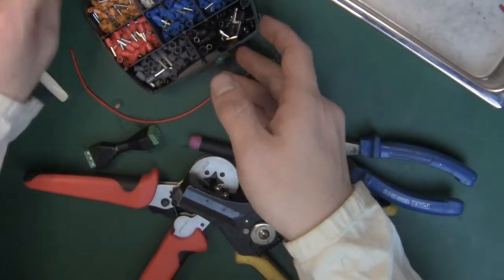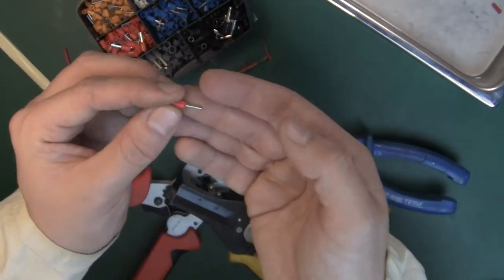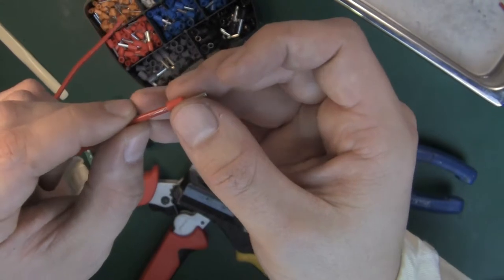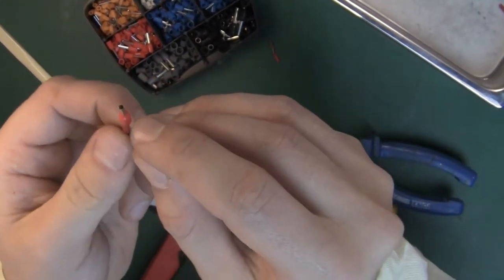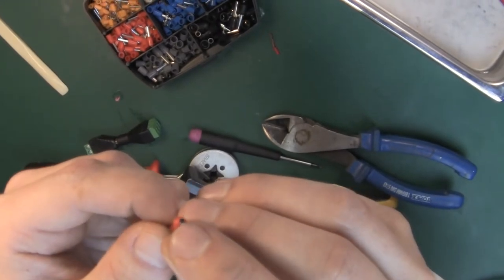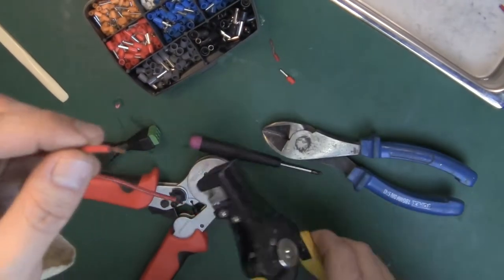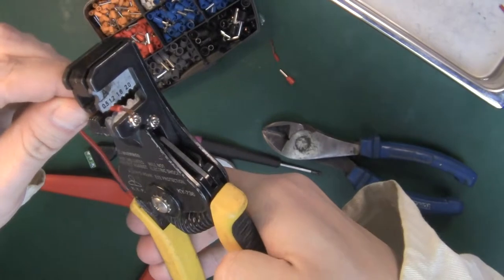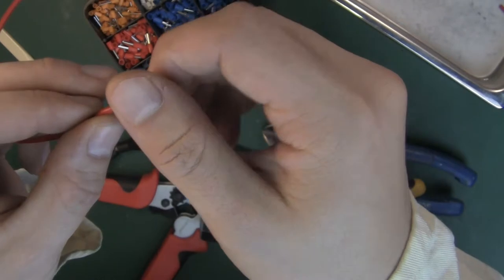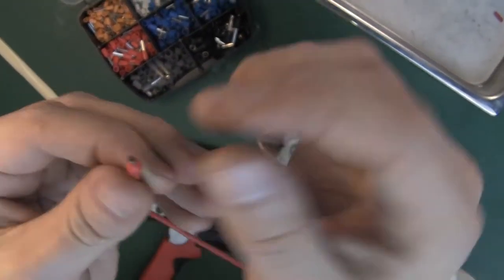You can use that barrel connector, just slide it onto the stripped wire. You have to make sure that you can see it on the end, so we have to take a little bit more of the insulation. Right now we can see on the end the copper.